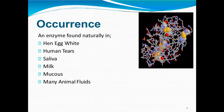Lysozyme occurs naturally in various places. It is present in hen egg white, and apart from that it is also naturally found in various plant and animal fluids. In human beings it is present in various body fluids like tears, saliva, milk, and mucus secretions, especially in nasal secretions.